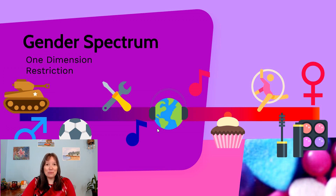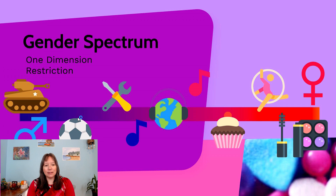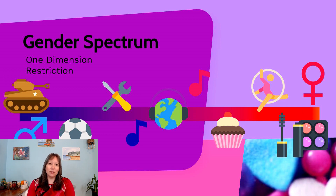According to this one-dimensional approach, we could have women that are very feminine and men that are very masculine, but also people whose interests are on the opposite end of the spectrum. Some women might be very masculine — enjoying sports, military action, and not wearing makeup — while some men might be very feminine, enjoying baking and wearing makeup but not really enjoying sports.